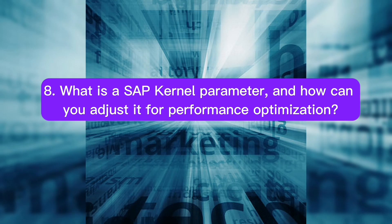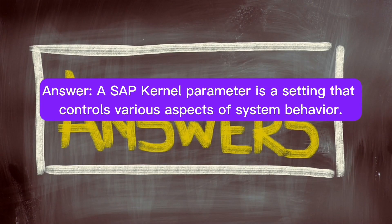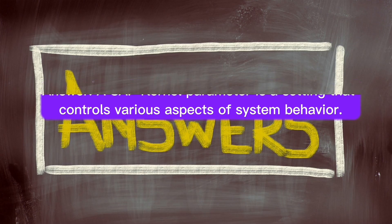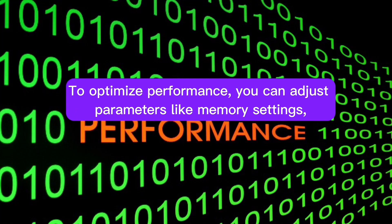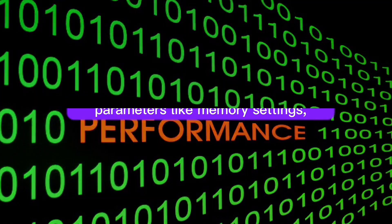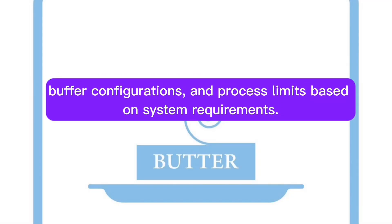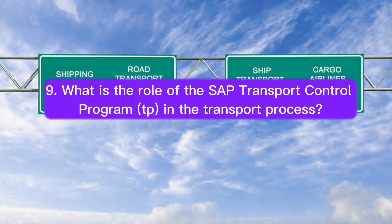Question 8: What is a SAP kernel parameter, and how can you adjust it for performance optimization? A SAP kernel parameter is a setting that controls various aspects of system behavior. To optimize performance, you can adjust parameters like memory settings, buffer configurations, and process limits based on system requirements.